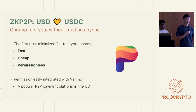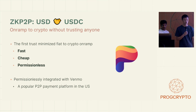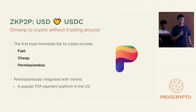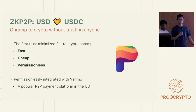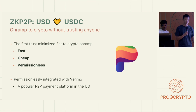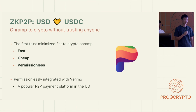Our solution with ZK P2P allows you to on-ramp to crypto without trusting anyone. It's the first trust-minimized fiat to crypto on-ramp that's fast, cheap, and permissionless. It's fast because there's no additional KYC required — we borrow the KYC directly by proving you're a Venmo user. It's cheap because it's peer-to-peer, which allows the market to dictate rates in the protocol. And lastly, it's permissionless and composable with the rest of DeFi, so you can atomically create actions with on-ramping USD. Right now it's permissionlessly integrated with Venmo, which is a popular P2P payment platform in the U.S.